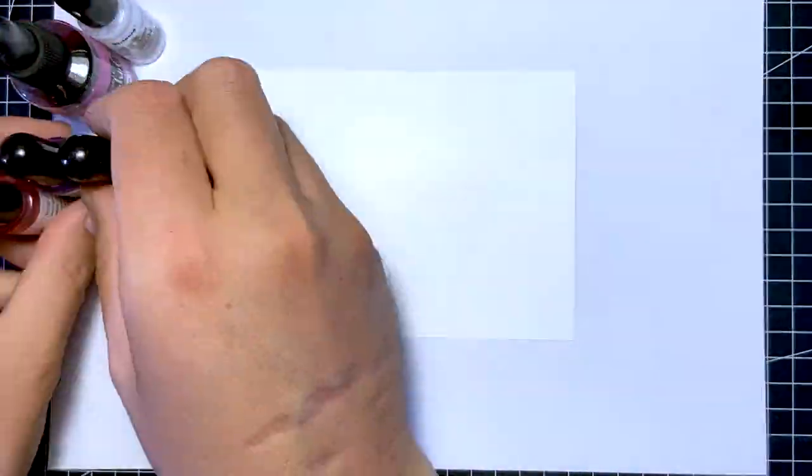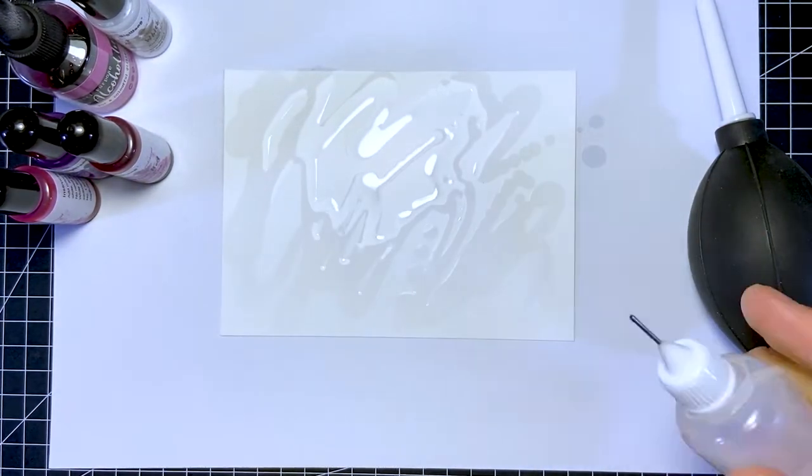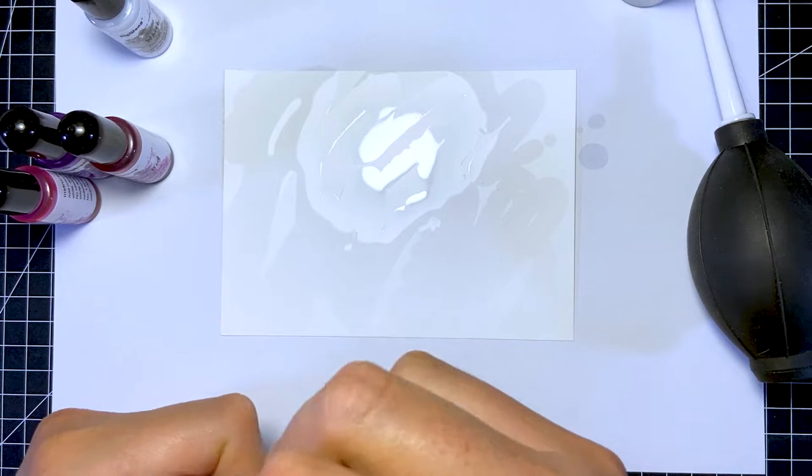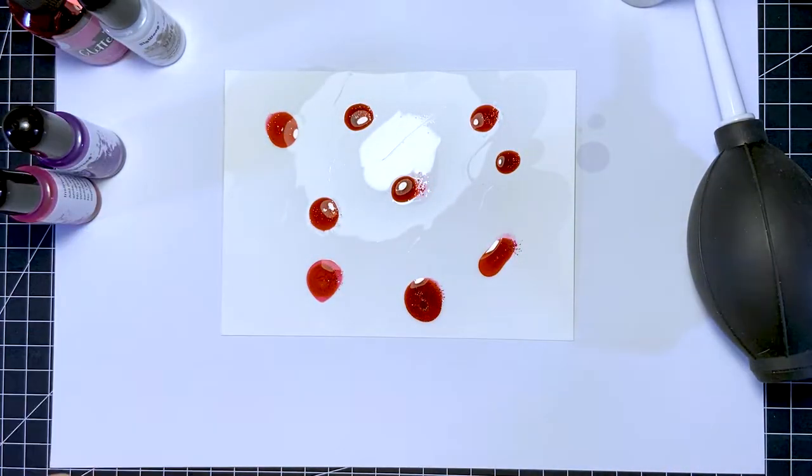Now it's time to make the background. I cut a piece of Yupo paper slightly larger than the stitched rectangle die I'm going to use later. I start out with adding some blending solution to the paper before I start adding drops of alcohol ink.